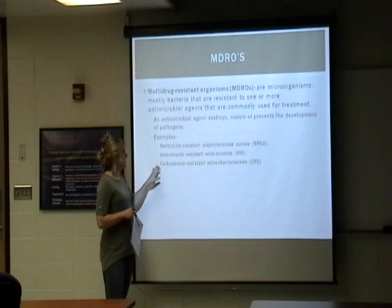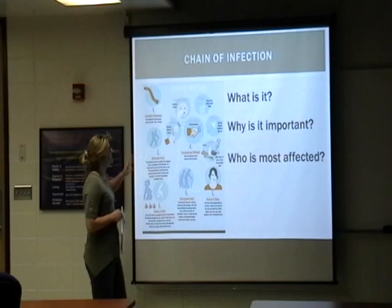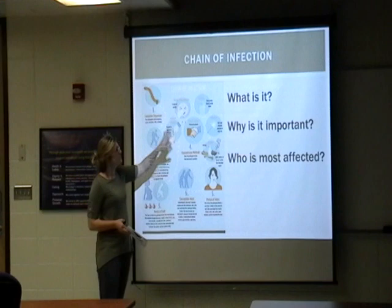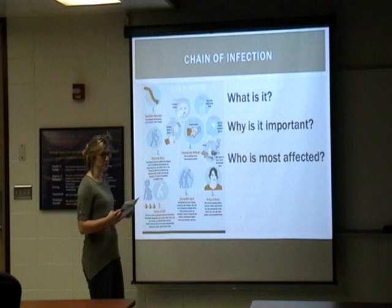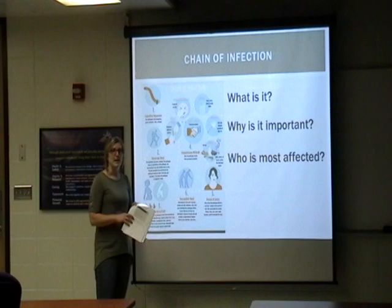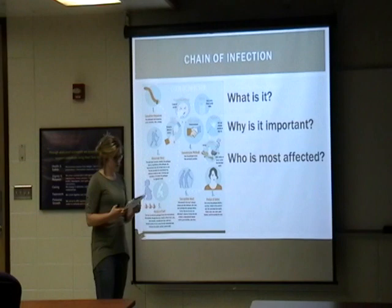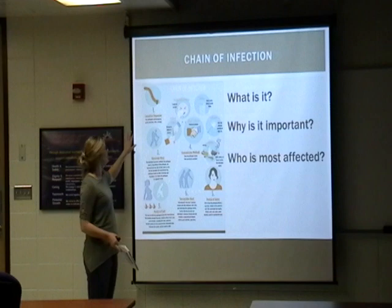The next thing is what's called the chain of infection. It has six links, and any time you break one of those links, you stop that chain of infection or mode of transmission. The importance here is having asepsis — the absence of bacteria, microorganisms, or viruses. Link one is the causative organism: that's the pathogen, microorganism, or bacteria.